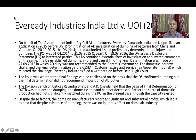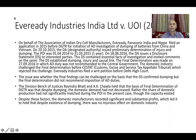DGTR held that despite the existence of dumping, there was no injurious effect on the domestic industry. The court upheld this: if there is dumping but no injury to the domestic industry, there can be no remedy. The High Court sustained the decision of DGTR, not superimposing its own economic analysis on the designated authority's determination.